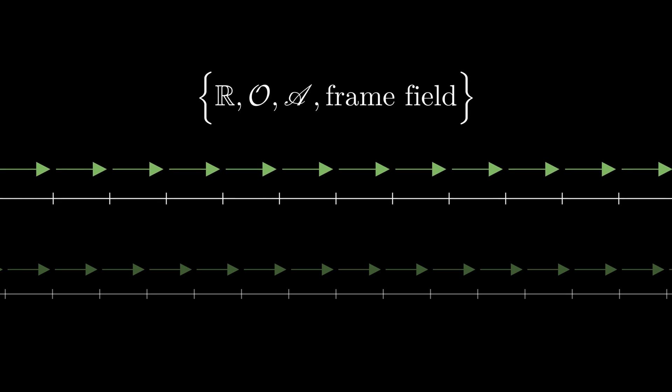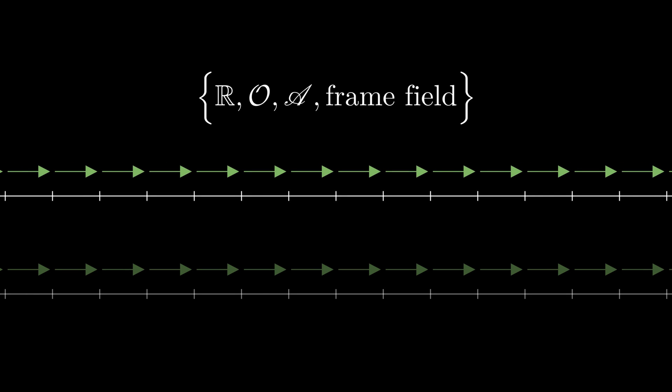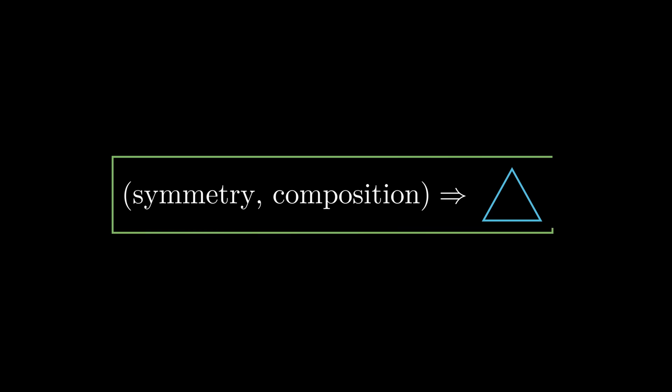Stretching doesn't work, and reflections also don't work. More generally, any group of the type symmetries, composition has an object for which it is the symmetries of.